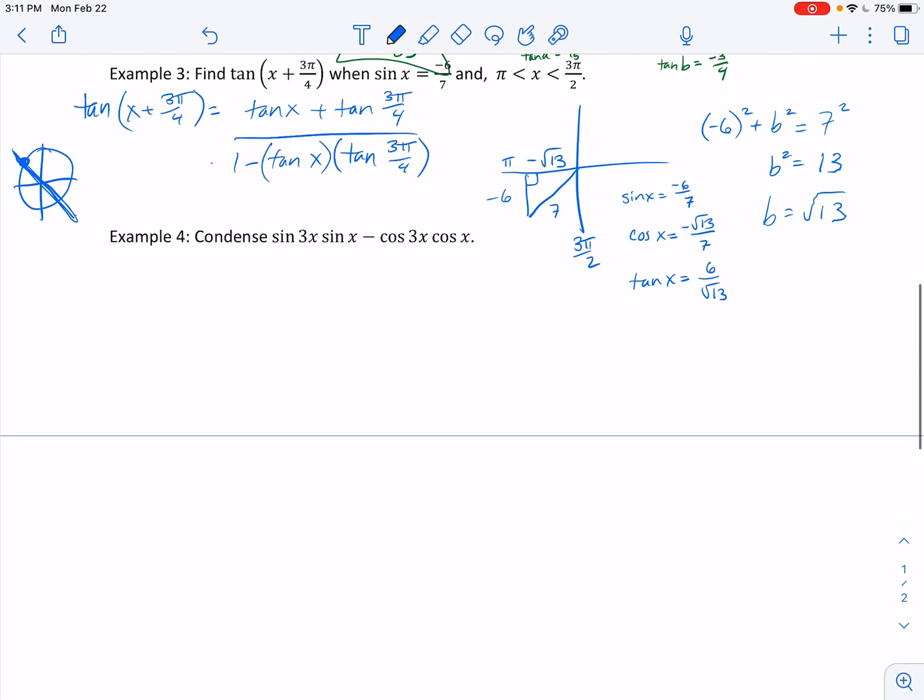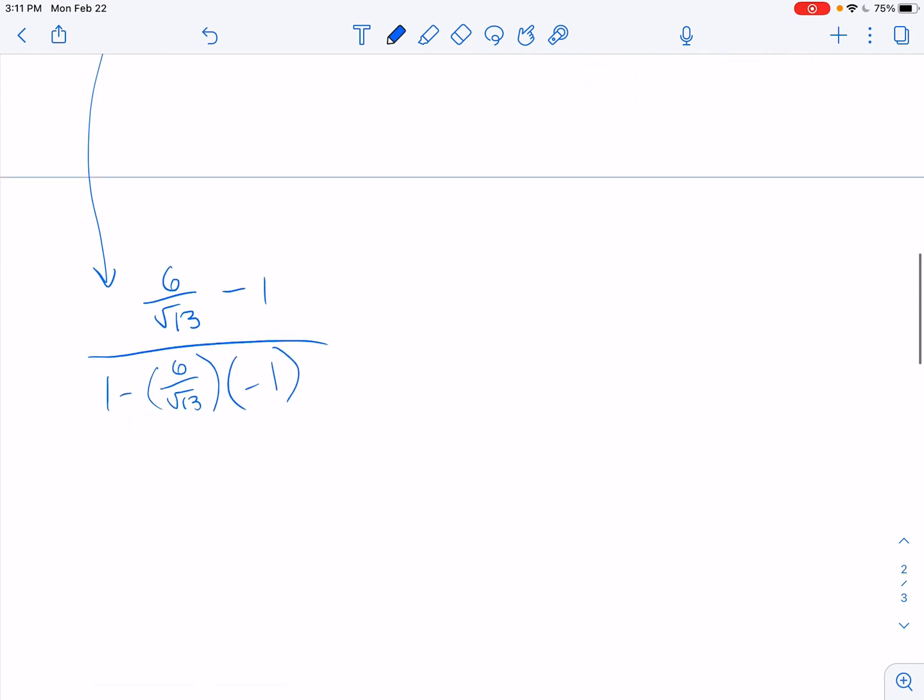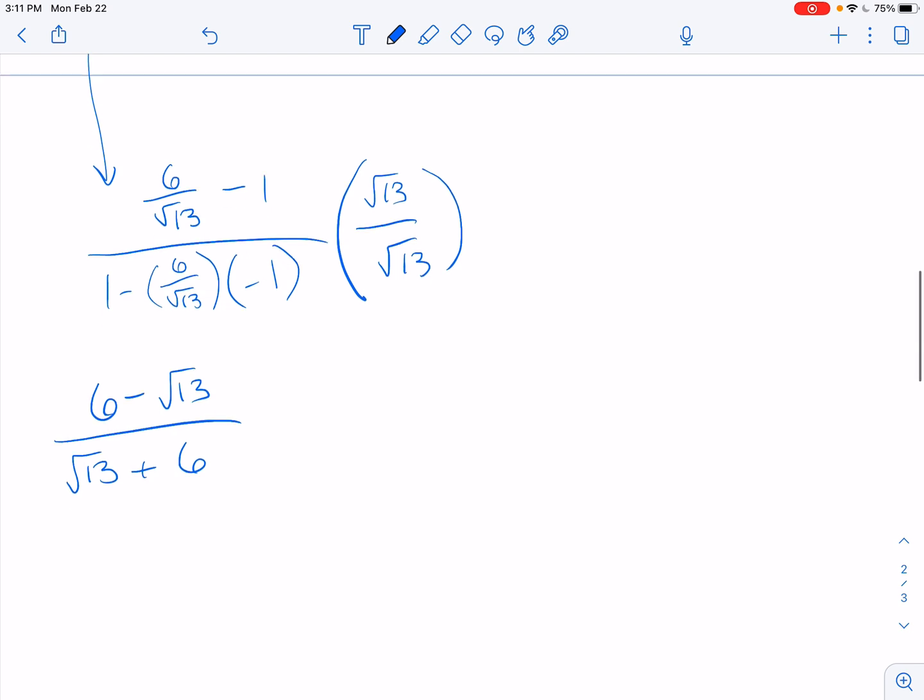Hang on, I'm going to, I'm going to come down here. So I have this 6 over root 13 minus 1 divided by 1 minus 6 over root 13 times a negative 1. Okay, so what I'm going to do at this point, I don't want fractions in a fraction. So let's multiply everything by root 13 over root 13. And this gives me 6 minus root 13 over root 13 plus 6.